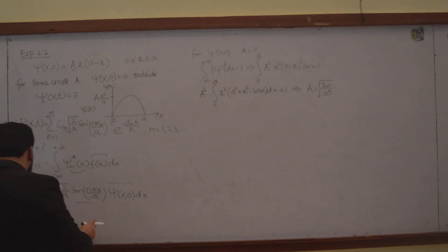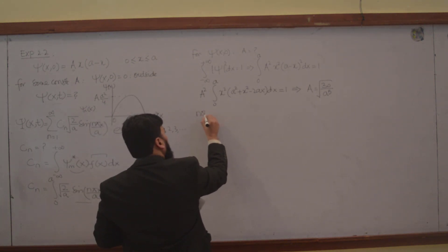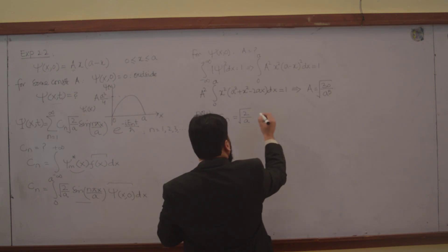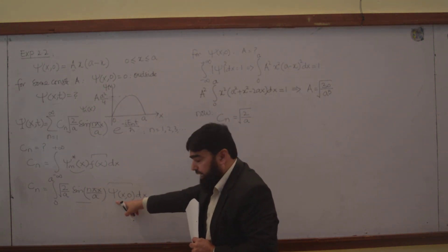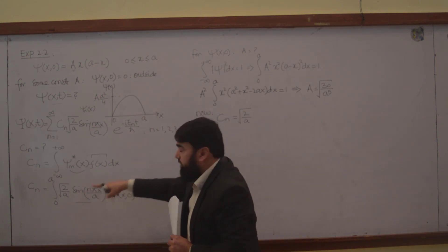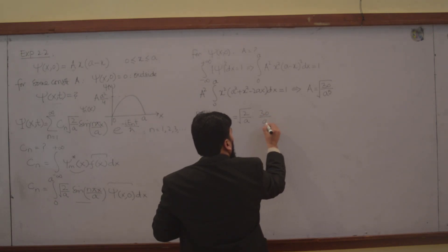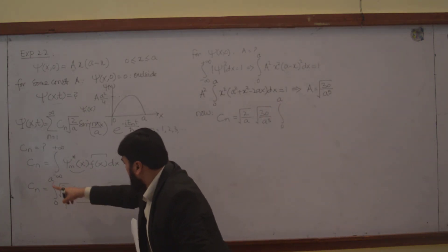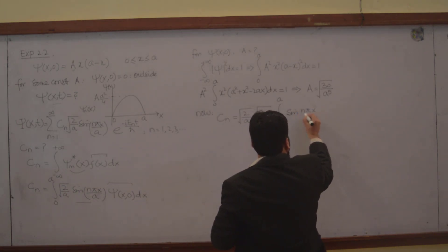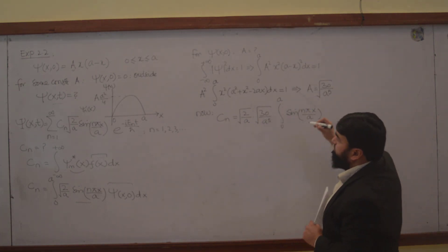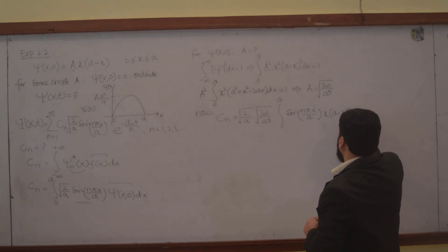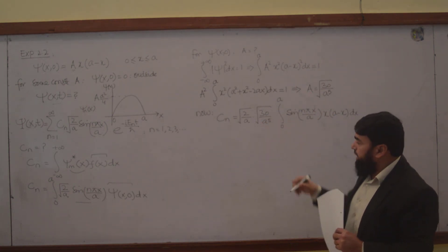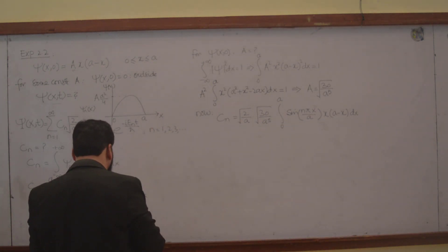Now I will start with Cm. Cm is equal to 2 over A, and for this one I will write the value of A here. So the value of A will be √(30/A⁵), and then from 0 to A, sin(mπx/A) times psi of x0 becomes x times (A minus x) dx. Now my equation is ready and I will integrate this.